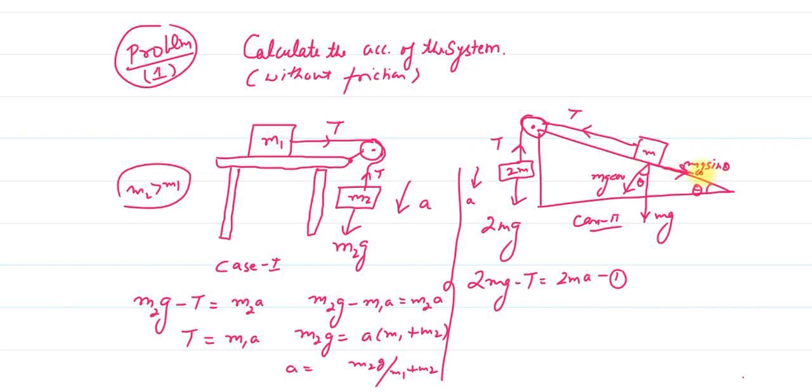The tension opposes mg sin theta. If the system goes up, then tension is going up. So the equation for mass m will be: T minus mg sin theta equals ma.